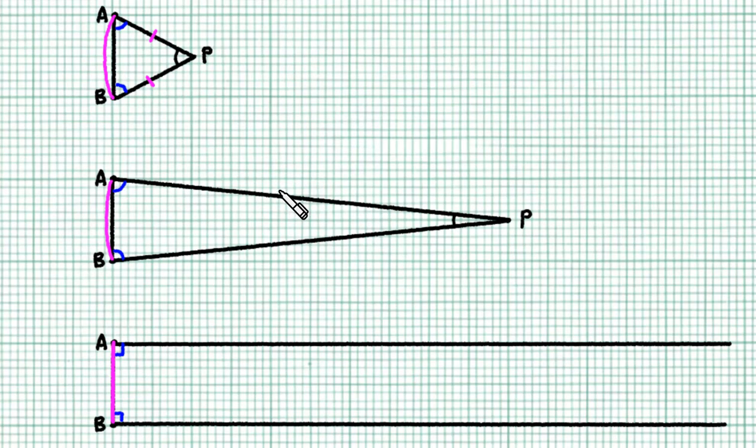So this is what happens when you have a very, very thin isosceles triangle. This angle becomes zero degrees. And these two angles become 90 degrees. So the two radii become practically parallel to each other. And the circular arc becomes practically a straight line.